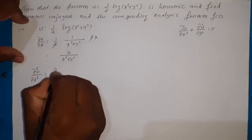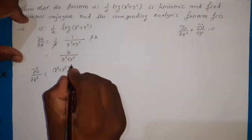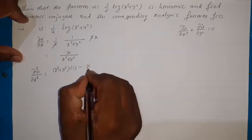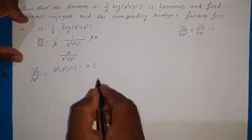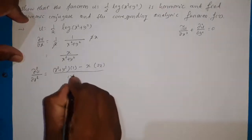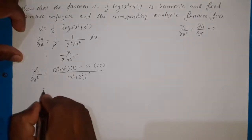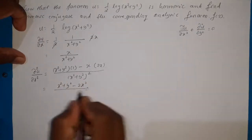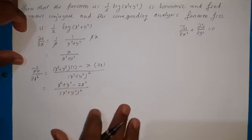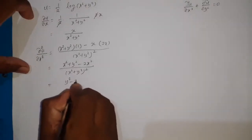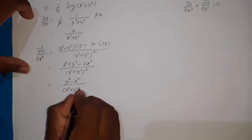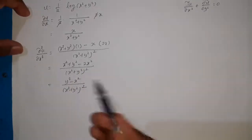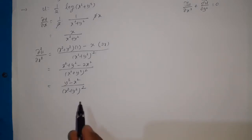Applying the quotient rule: ∂²u/∂x² = [(x² + y²)·1 − x·2x] / (x² + y²)² = (x² + y² − 2x²) / (x² + y²)² = (y² − x²) / (x² + y²)².